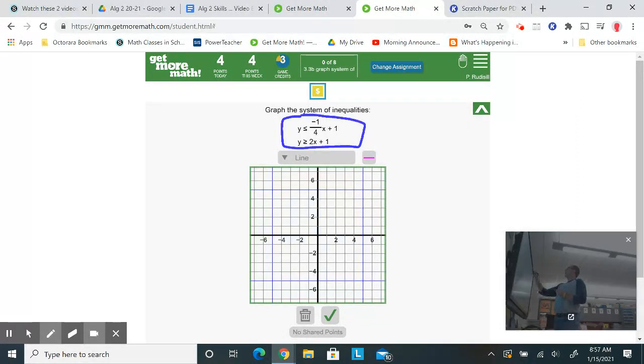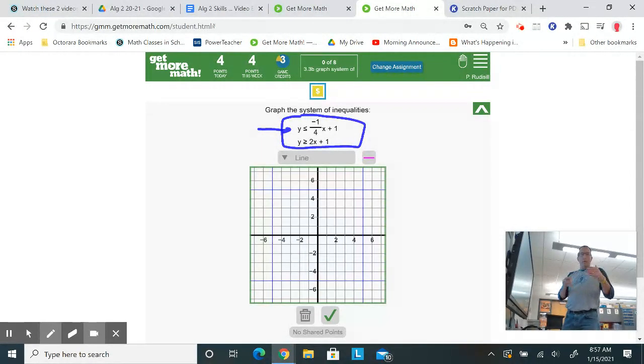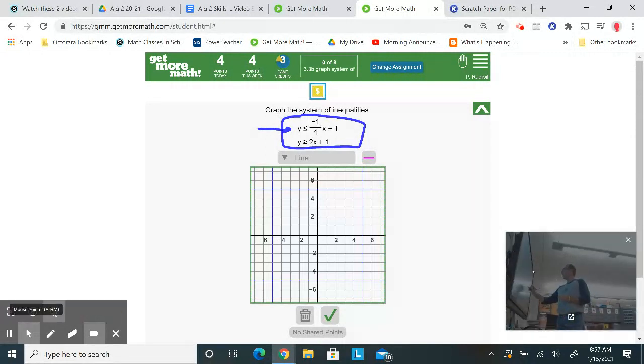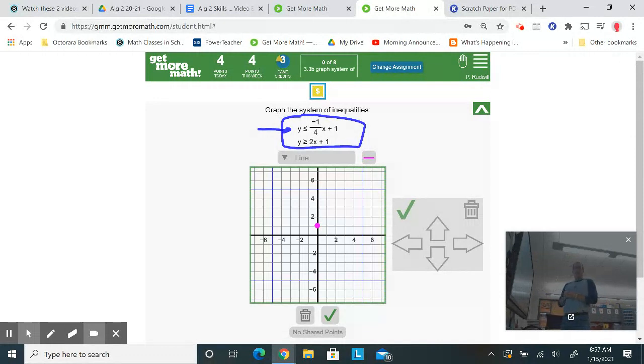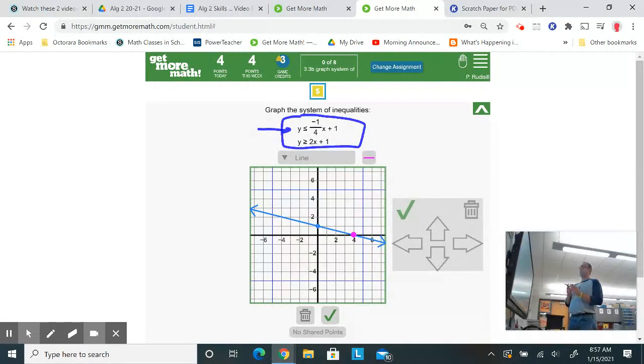And we're going to graph the first inequality's boundary line. So instead of rewriting it, you know it's going to be y equals negative one-fourth x plus one. So one is the y-intercept. Boom. It's a negative one-fourth slope, so down one, right four, one, two, three, four, tap. And it does say less than or equal to, so I have a solid line. I'll keep it that way.